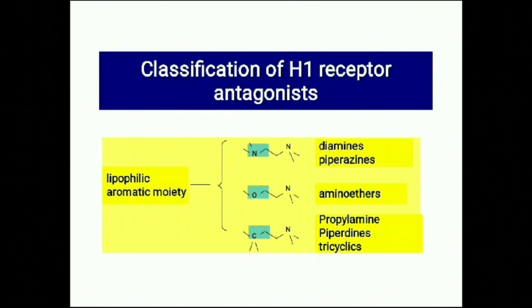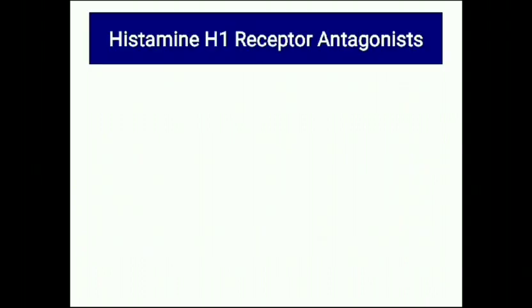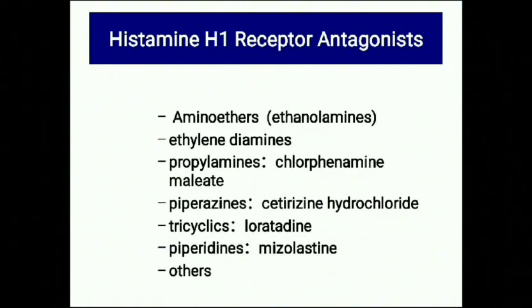The H1 receptor antagonists are classified into the following classes: amino ethers, also called ethanolamines; ethylamines; ethylenediamines; propylamines; piperidines; and tricyclics, with drugs such as loratidine and desloratadine as examples.